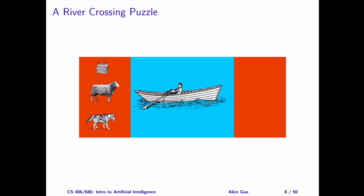The next one is a river crossing problem called the wolf, goat, and cabbage problem. Once upon a time, a farmer went to a market and purchased a wolf, a goat, and a cabbage. On their way home, the farmer came to the bank of a river and rented a boat. But crossing the river by boat, the farmer could carry only themselves and a single one of their purchases — the wolf, the goat, or the cabbage. If left unattended together, the wolf would eat the goat, or the goat would eat the cabbage. The farmer's challenge was to carry themselves and all the purchases to the far bank of the river, leaving each purchase intact. How did the farmer do it?